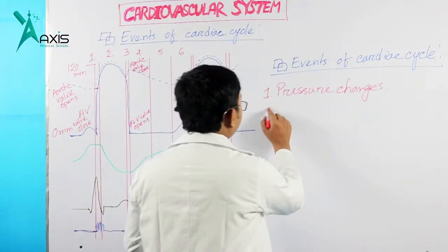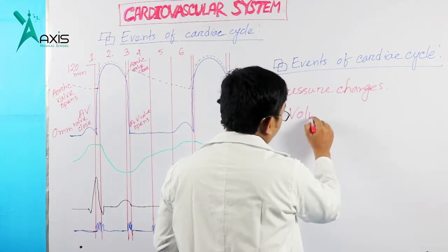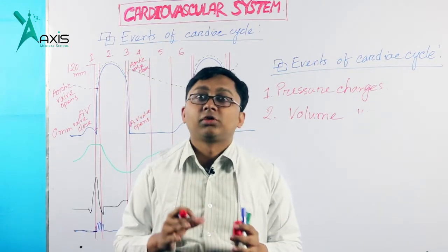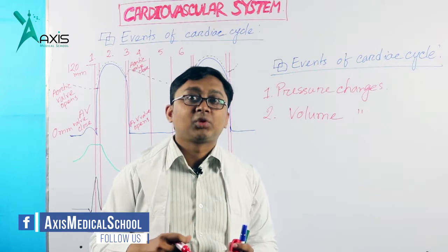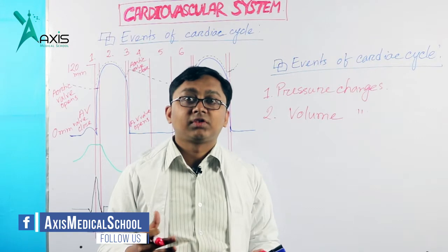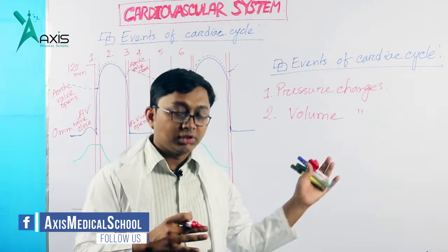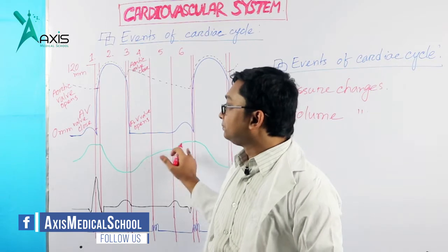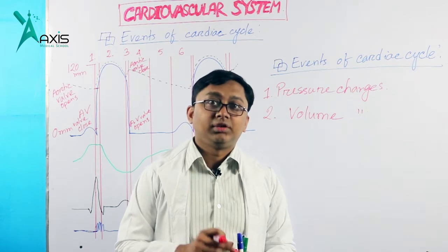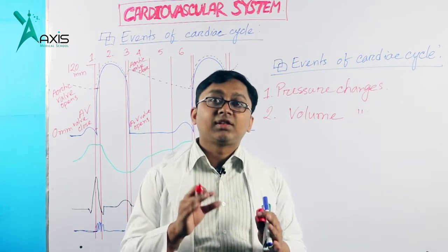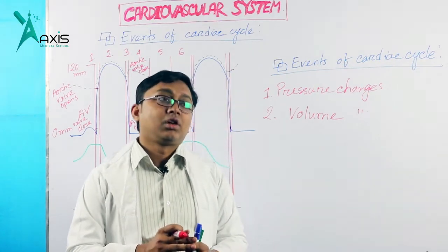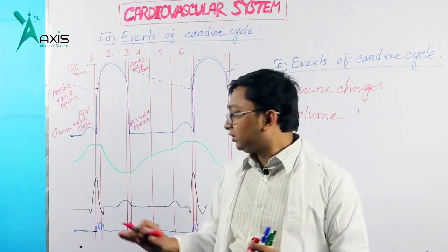Number two, volume changes. During the cardiac cycle, your volume also gets changed. With time, somewhere you get increased volume and somewhere you get decreased volume — we will show it in the diagram. Then, not only mechanical events occur during the cardiac cycle, there are some electrical changes also.